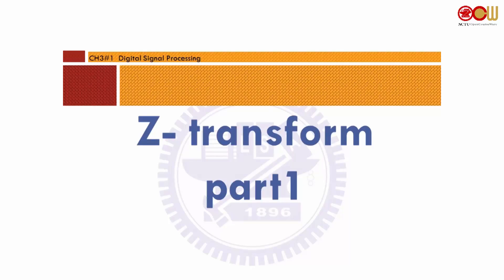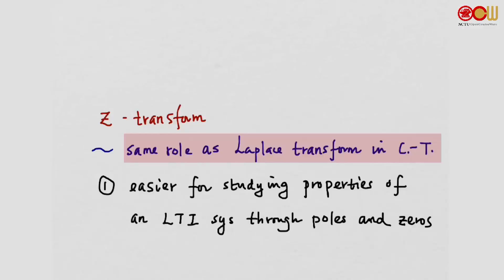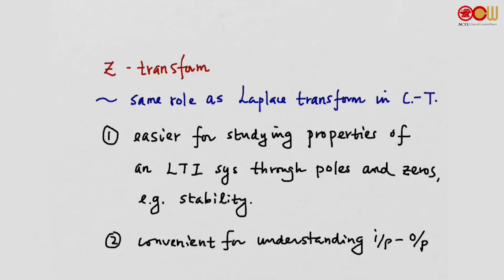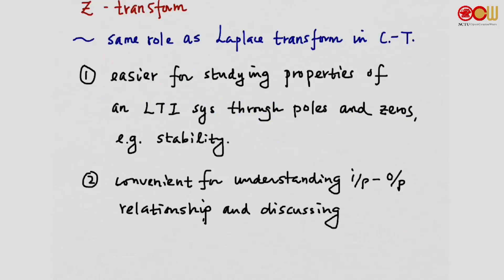Chapter 3: Z-Transform. The Z-Transform plays the same role as the Laplace transform in continuous time. It is easier for studying properties of an LTI system through poles and zeros — for example, stability of the system. Sometimes it is also more convenient for studying input-output relationships, and also for discussing implementation. We will talk about these in Chapter 5 and Chapter 6.